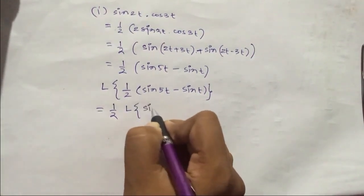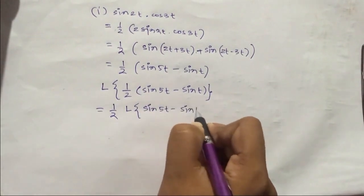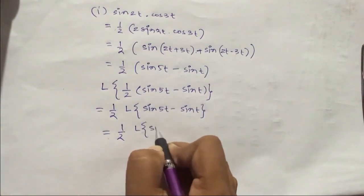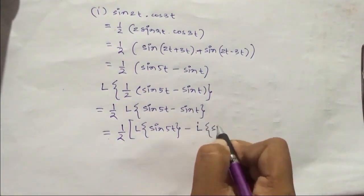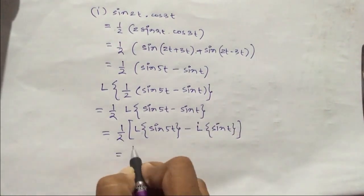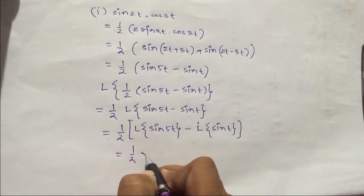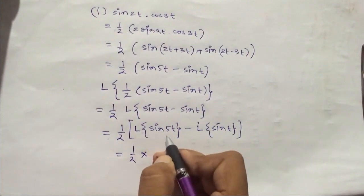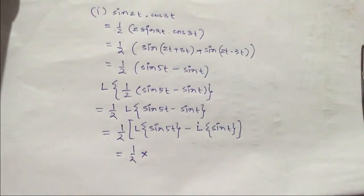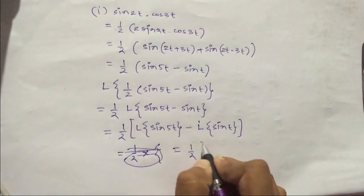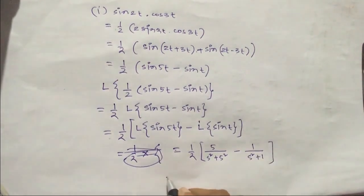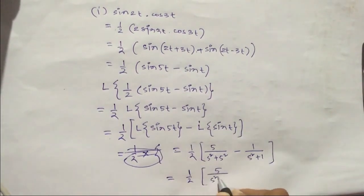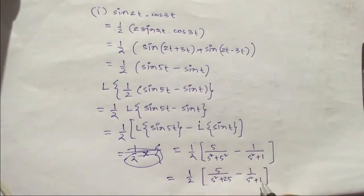Now we will separate these two terms: Laplace transform of sin(5t) minus Laplace transform of sin(2t). Using the standard formula L{sin(at)} = a/(s²+a²), it will be half of [5/(s²+25) - 2/(s²+4)].